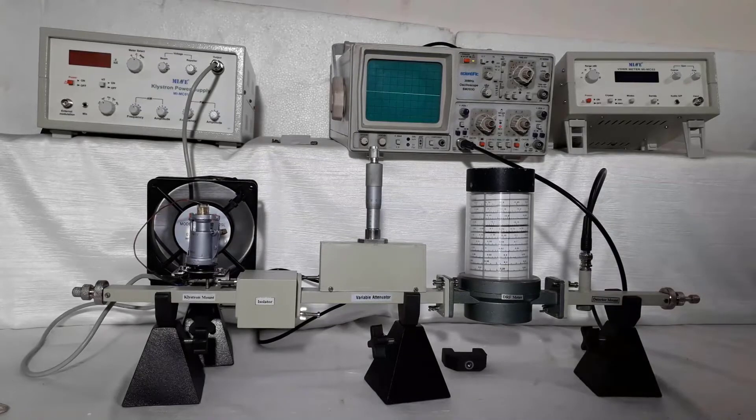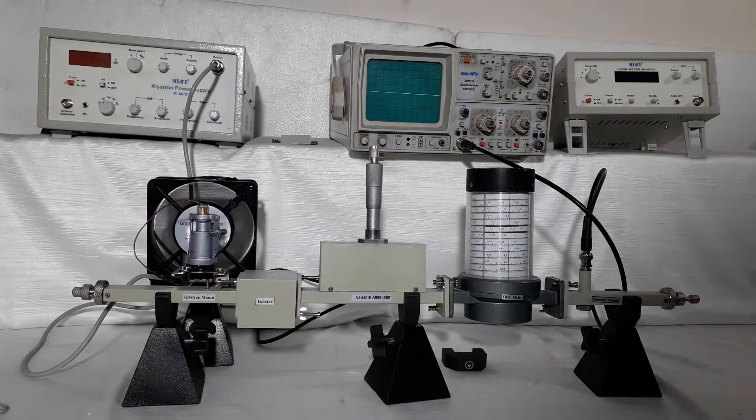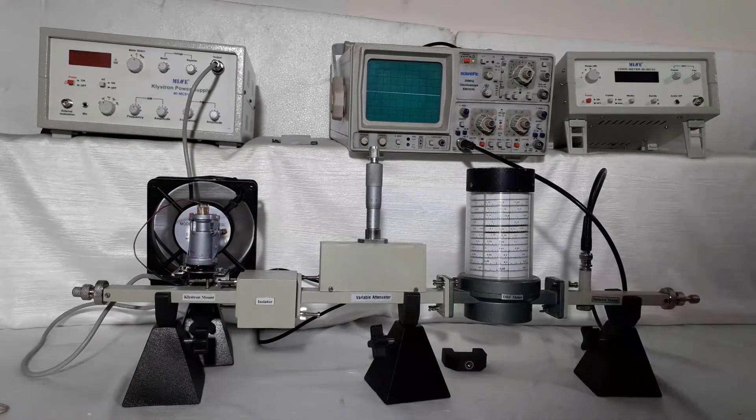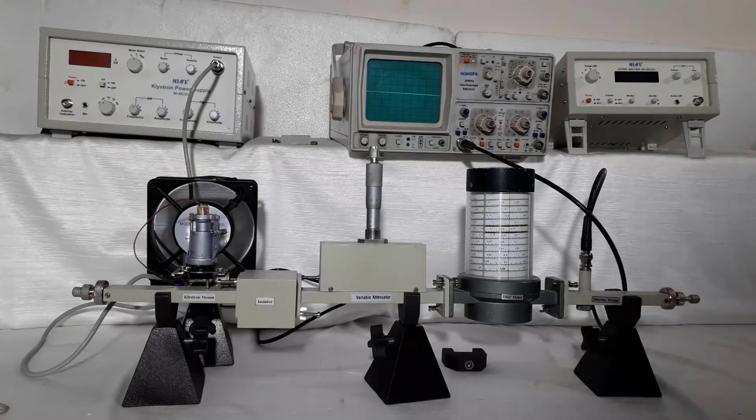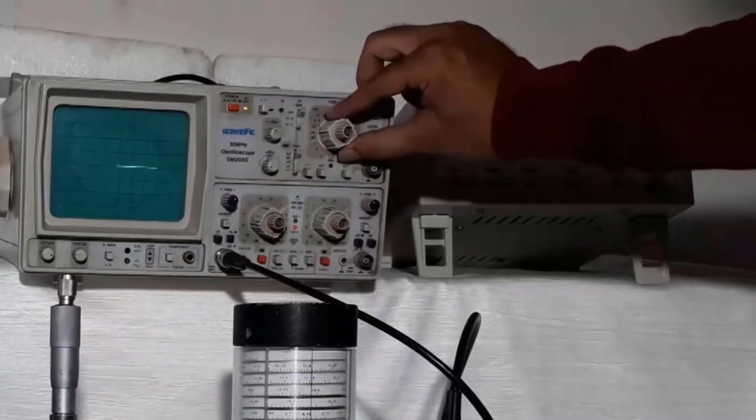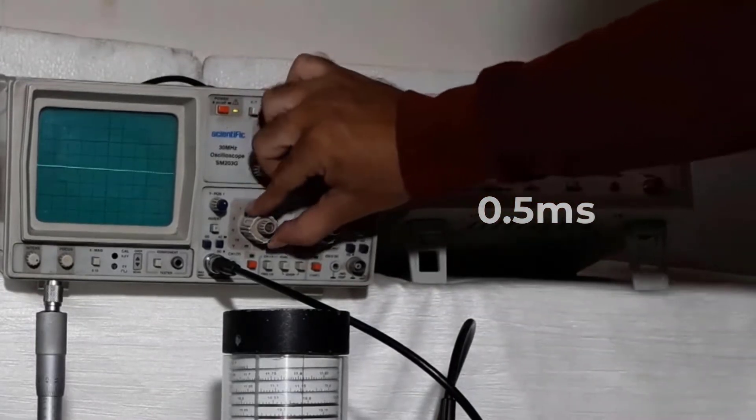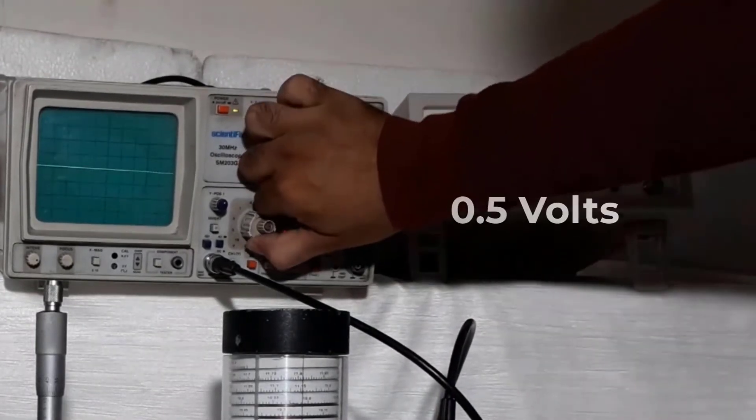To start the experiment, initially we will have to get square waveform output on CRO. First set all instrument knobs as given in the manual. At CRO, set time base for 0.5 milliseconds and amplitude base for 0.5 volts.